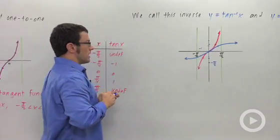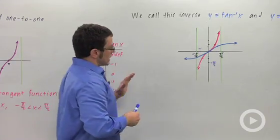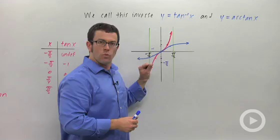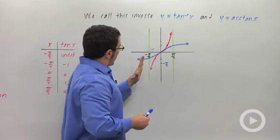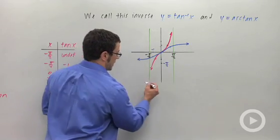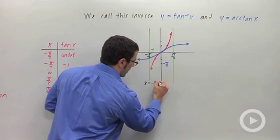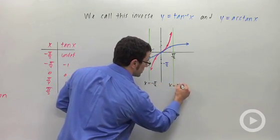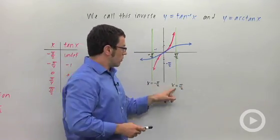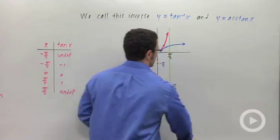Now I haven't yet drawn the asymptotes, but what's interesting is in this graph I've basically interchanged all the x and y coordinates of this graph, so I also interchanged the x and y coordinates for the asymptotes. The asymptotes are originally x equals negative pi over 2, x equals pi over 2. The new asymptotes are y equals negative pi over 2 and y equals pi over 2. So let me draw those.